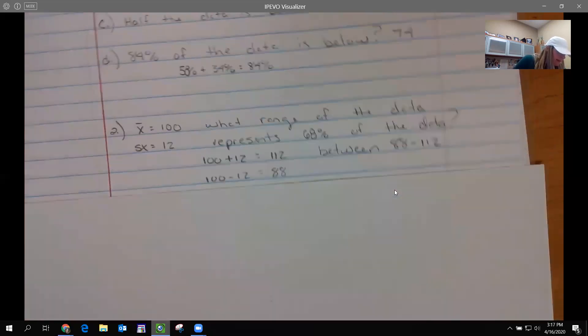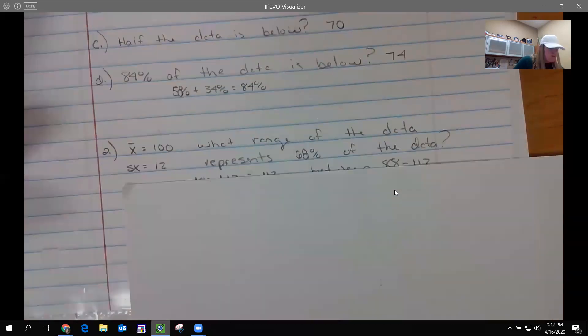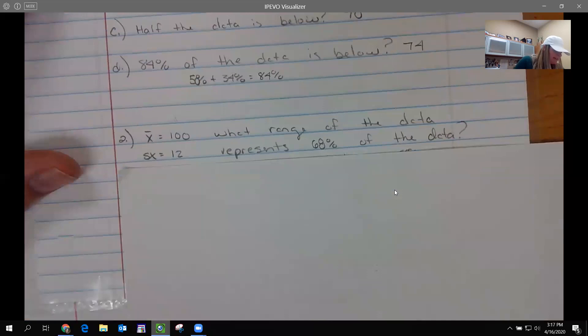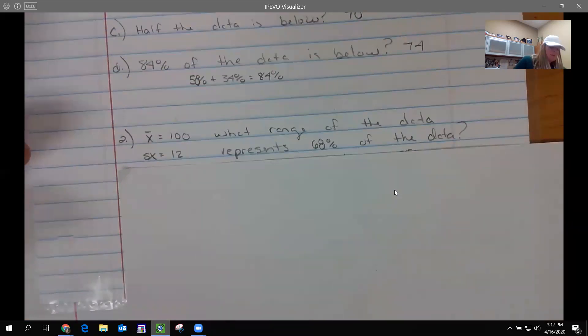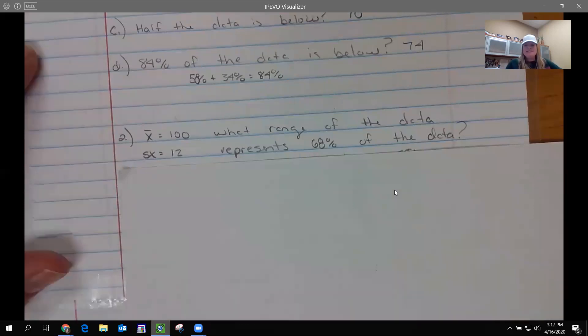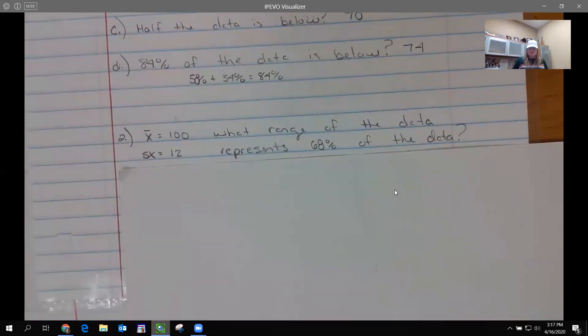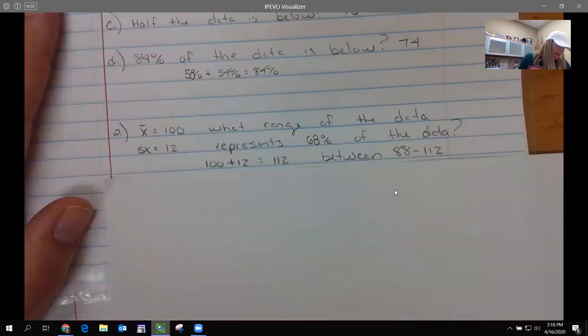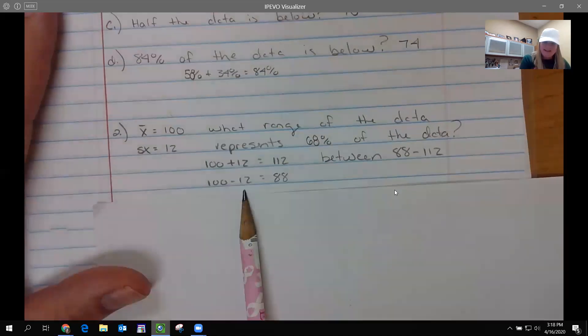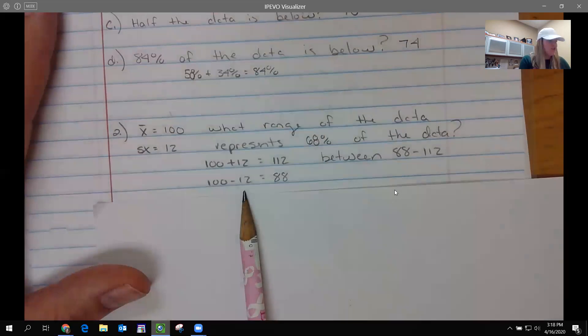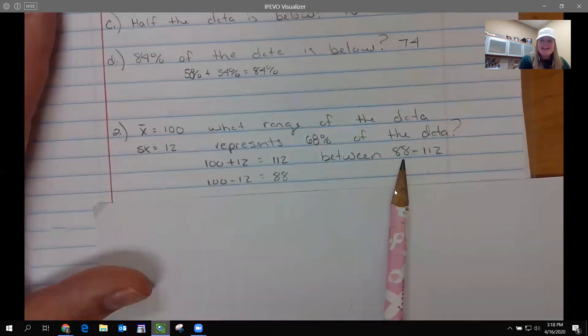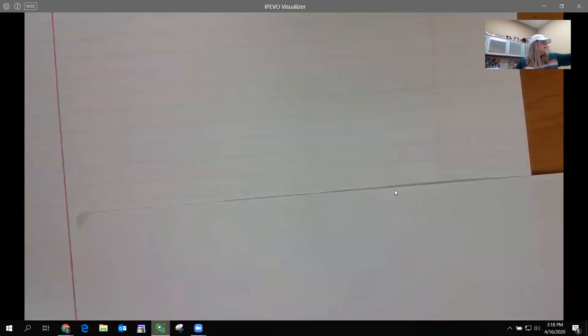Next one. If I'm given a new mean and standard deviation, what range of the data represents 68% of the data? So I have a new one. Take a second, pause the video and see if you can tell me 68% of the data is between what two numbers. When you come back, you should have added that 12 and subtracted that 12. One standard deviation away from the mean. So it's between 88 and 112.